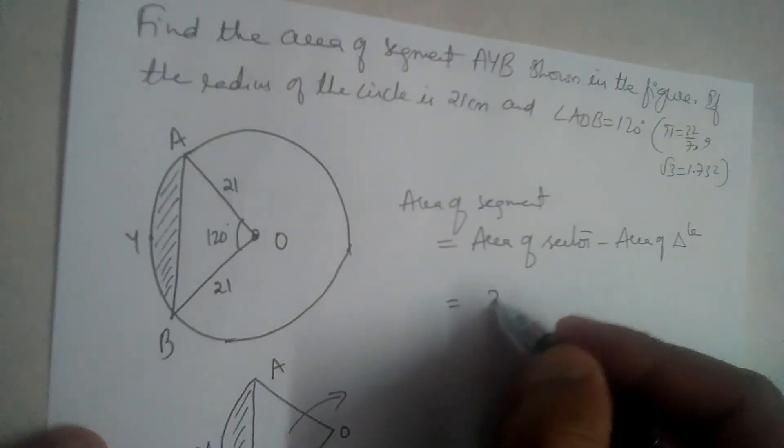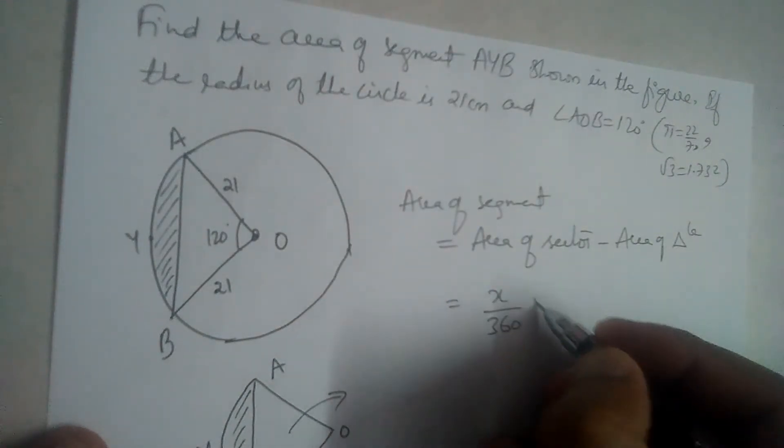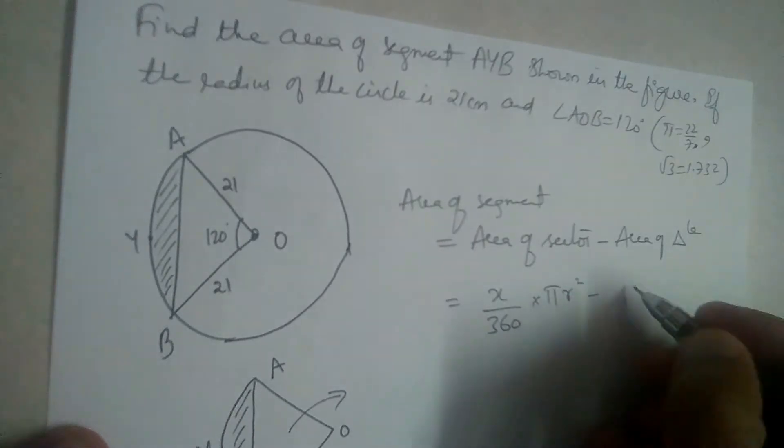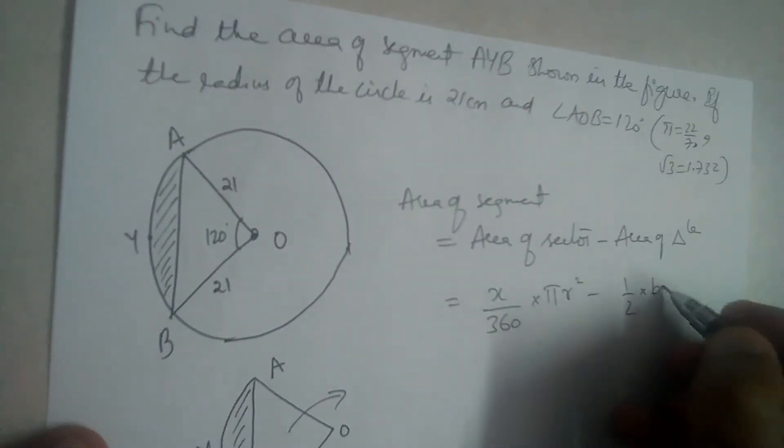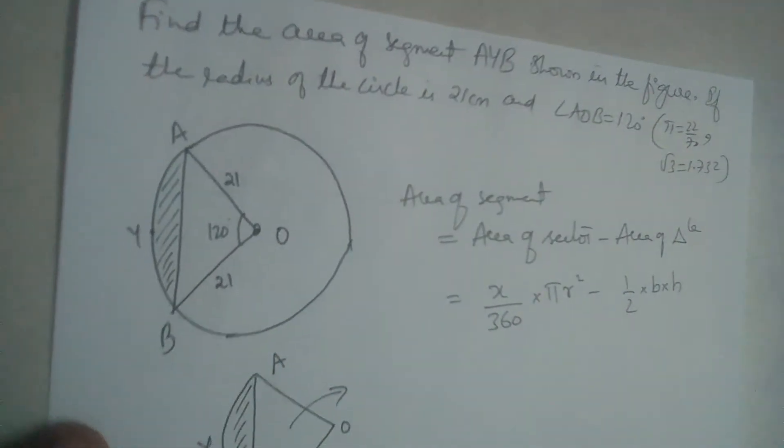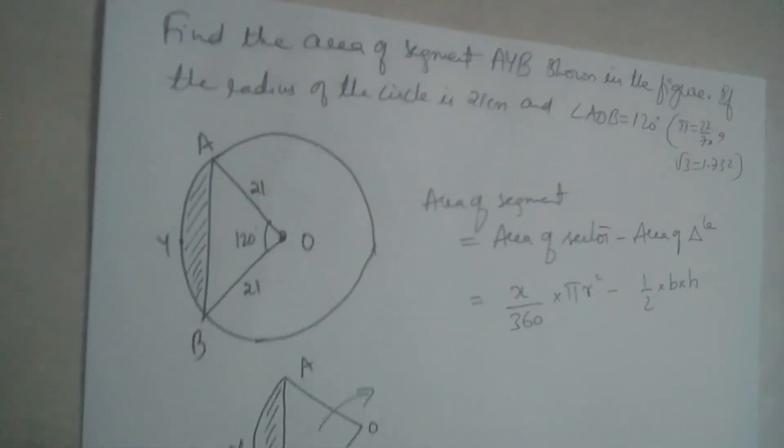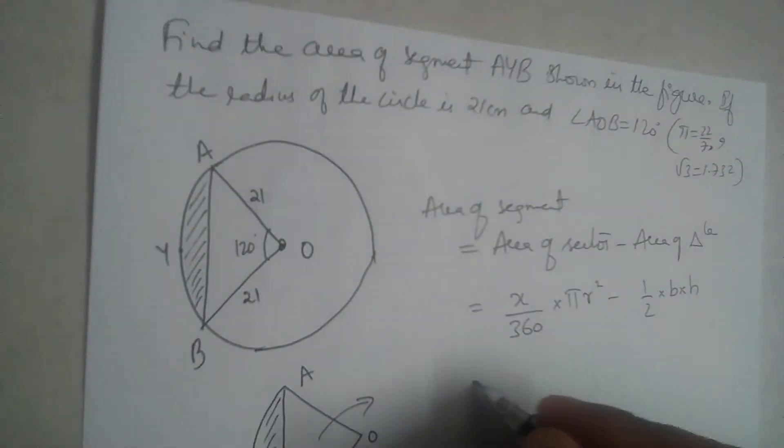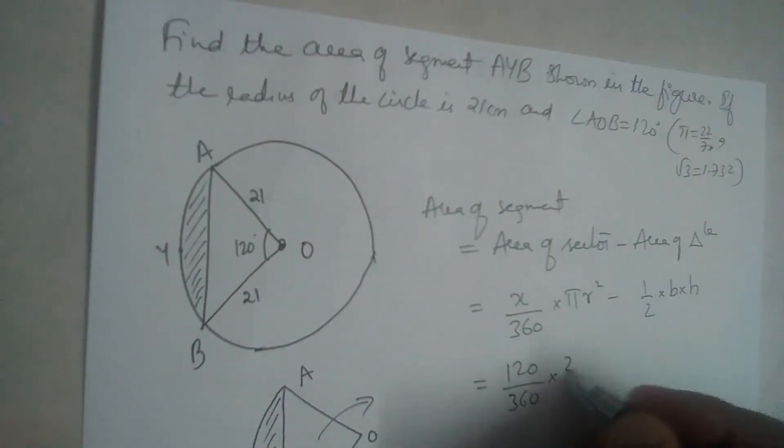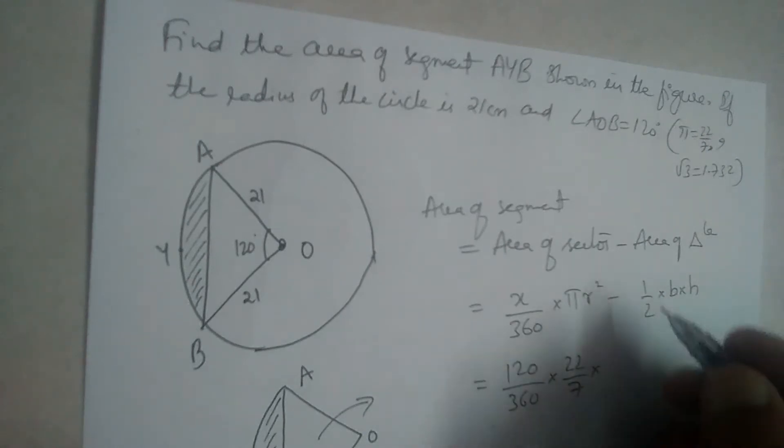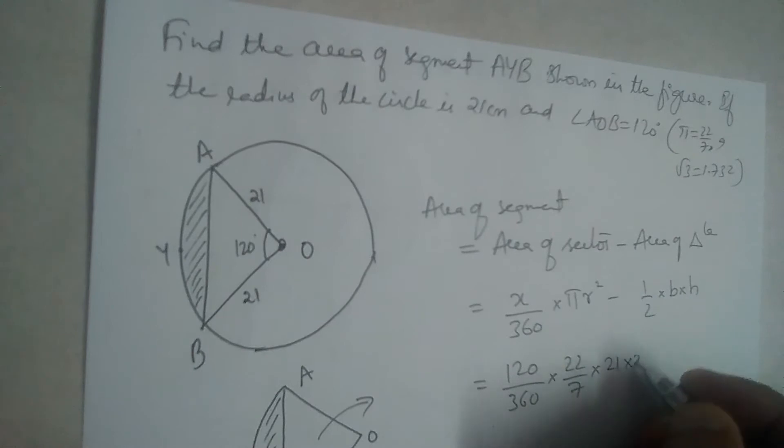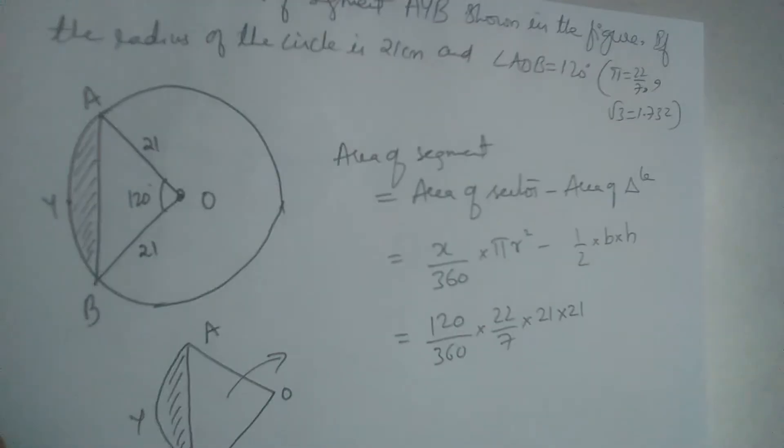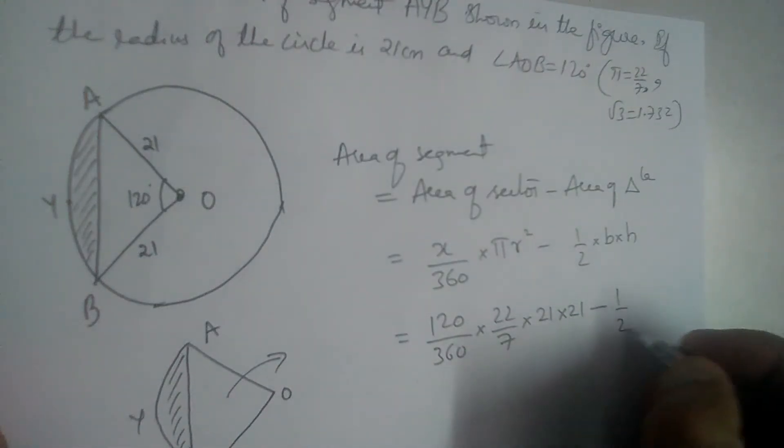Area of sector formula is X by 360 degrees into pi R square minus area of triangle is half into base into height. So X is 120, 120 degrees by 360 into pi is 22 by 7, R is radius of the circle 21, so it is 21 squared, that means 21 into 21, minus half into...